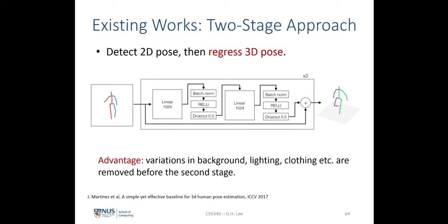Here are some existing works applied to 3D human pose estimation from 2D images. The first category is the two-stage approach, where we first detect the 2D pose — given the image, we detect the human pose in pixel space using a deep network — and then design another deep network to estimate the 3D pose.